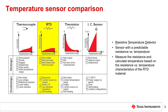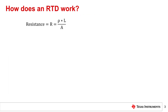These challenges are discussed in more detail in subsequent Precision Labs modules. Now that we understand some of the benefits and challenges of an RTD, let's consider how an RTD works. To understand how an RTD works, it is helpful to recall the equation for resistance.